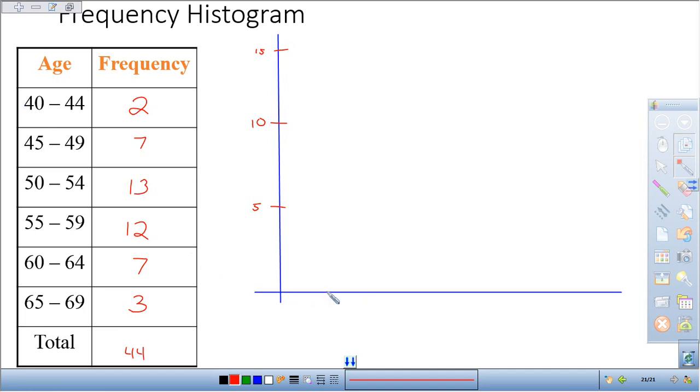Now what we're going to do is we're going to go 40 to 44. So that's what this is going to represent, 40 to 44. And then we're going to go 45 to 49, 50 to 54, 55 to 59, 60 to 64, and then 65 to 69.